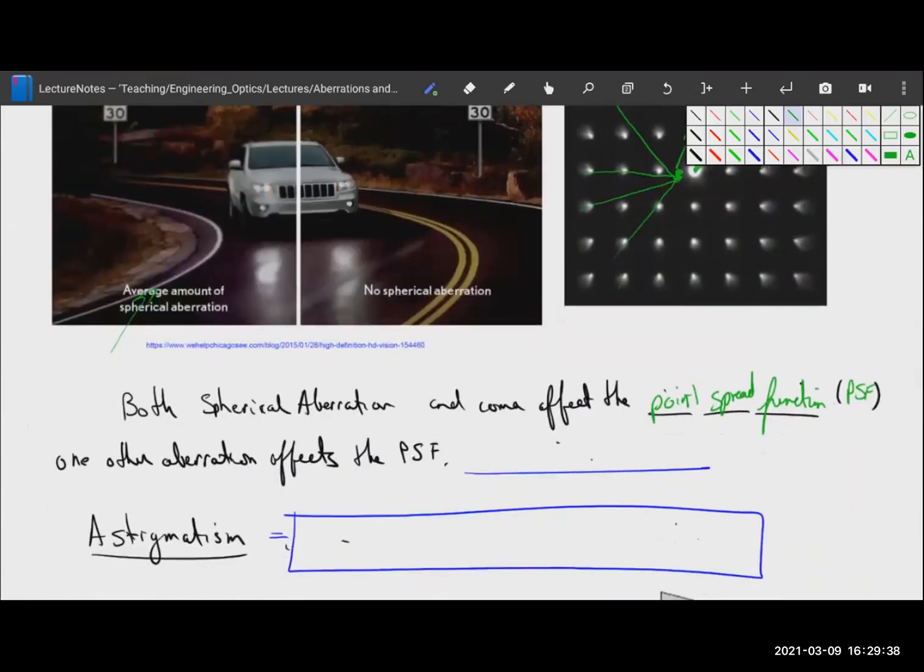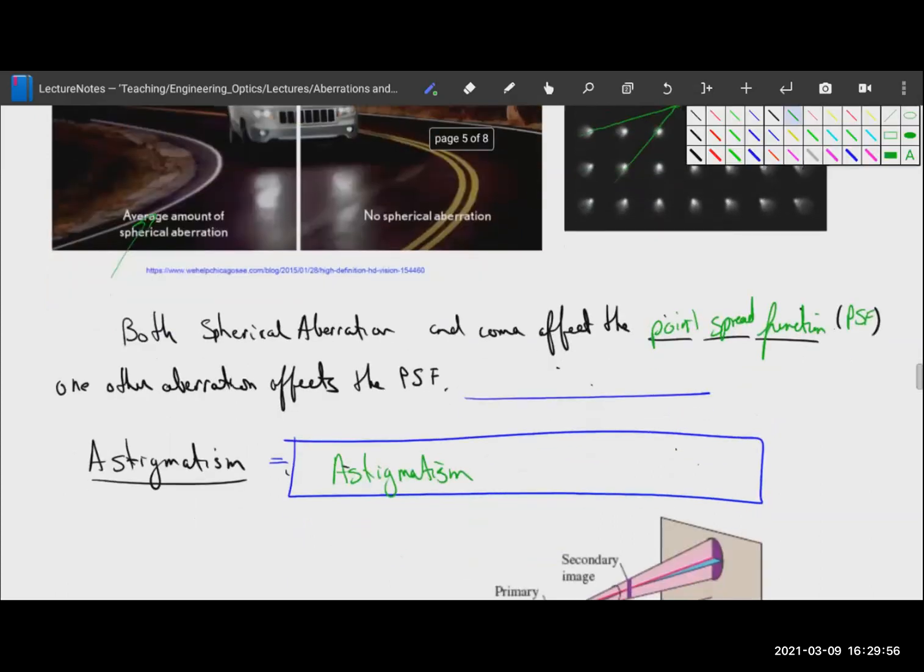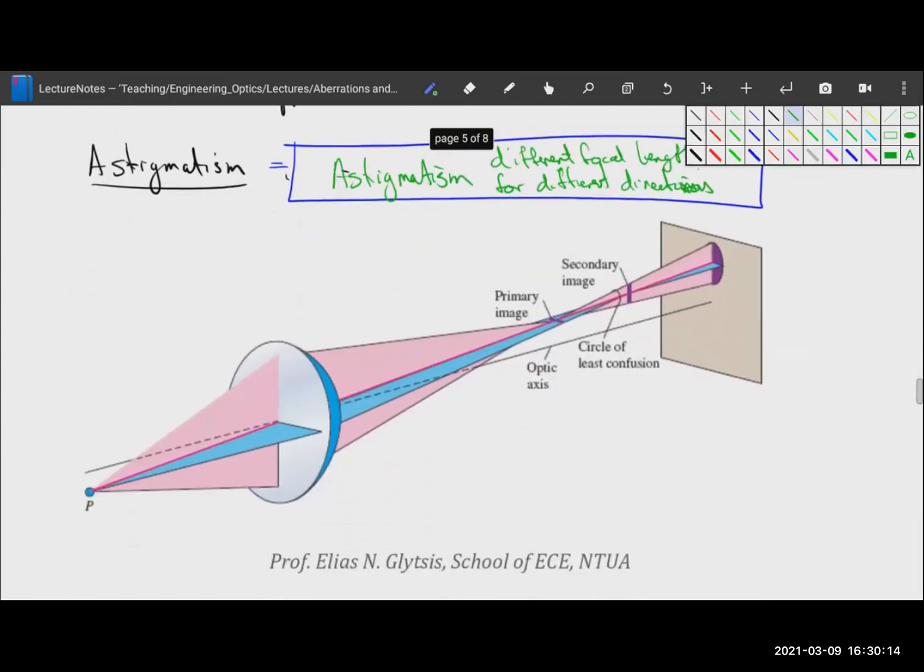One other aberration affects the point spread function, and that is astigmatism. And that's where you have different focal lengths for different directions. Here's an example of astigmatism where we have a point source of light and it is shining through a lens and being focused.